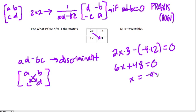We get 6x minus negative 48 or plus 48 equals 0. So when x equals, what's minus 48 divided by 6? Well, that equals negative 13.